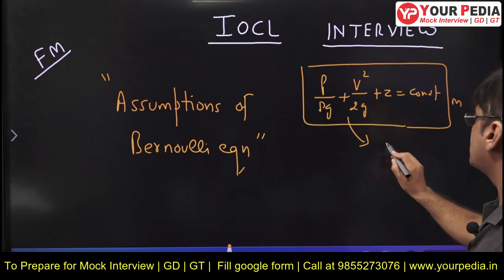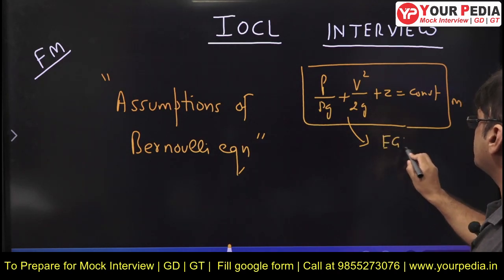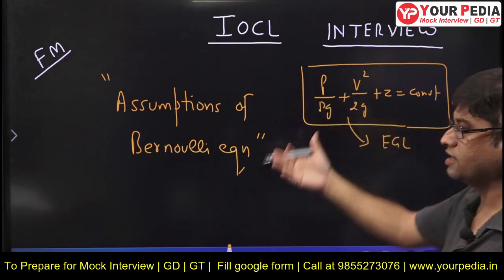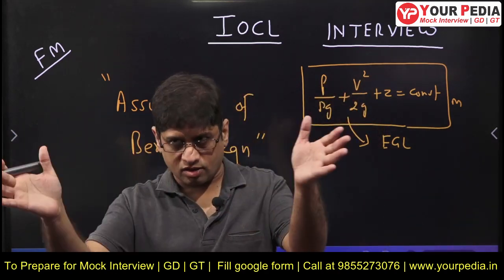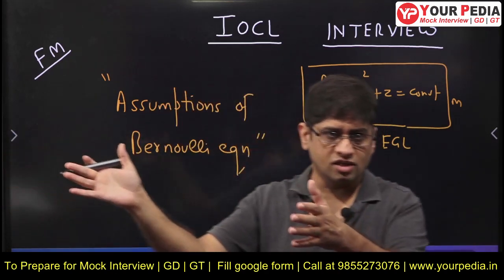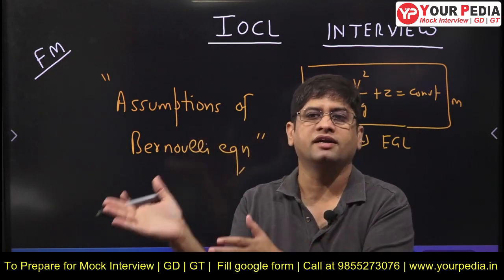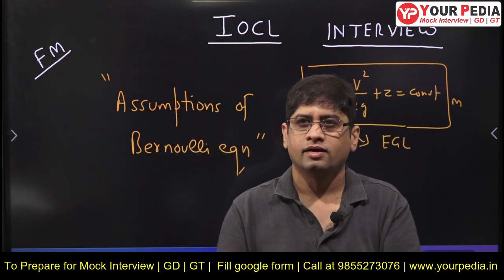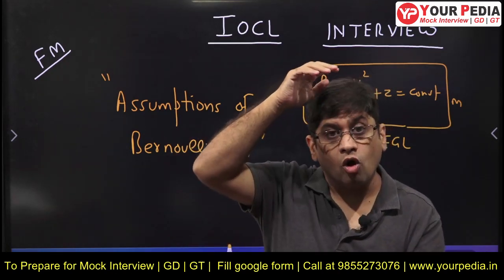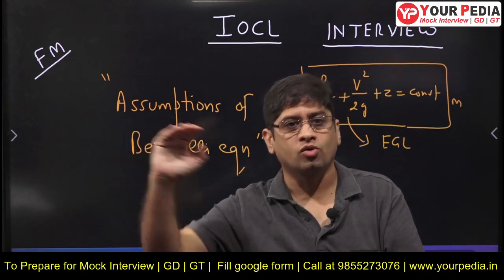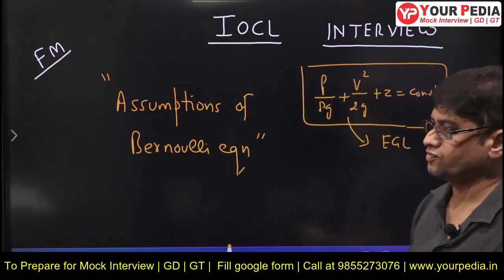Together, all three energy heads are called the energy gradient line. If you join a line consisting of these three energy heads, that line is called the energy gradient line. The significance of that line is that it always slopes downward in the direction of flow, which helps you determine the direction of flow.